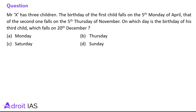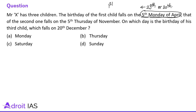This question says Mr. X has three children. The birthday of the first child falls on the 5th Monday of April. The 5th Monday can be on 29th April or 30th April. So if the 5th Monday is lying on 29th April, then 1st April is Monday. Or if it is lying on 30th April, then 2nd April will be Monday.